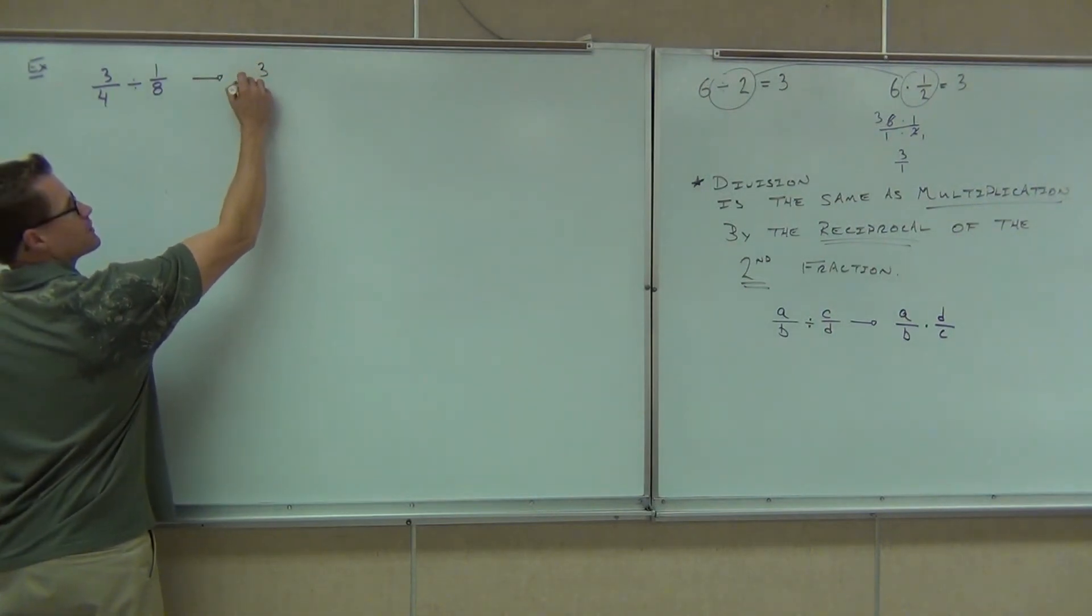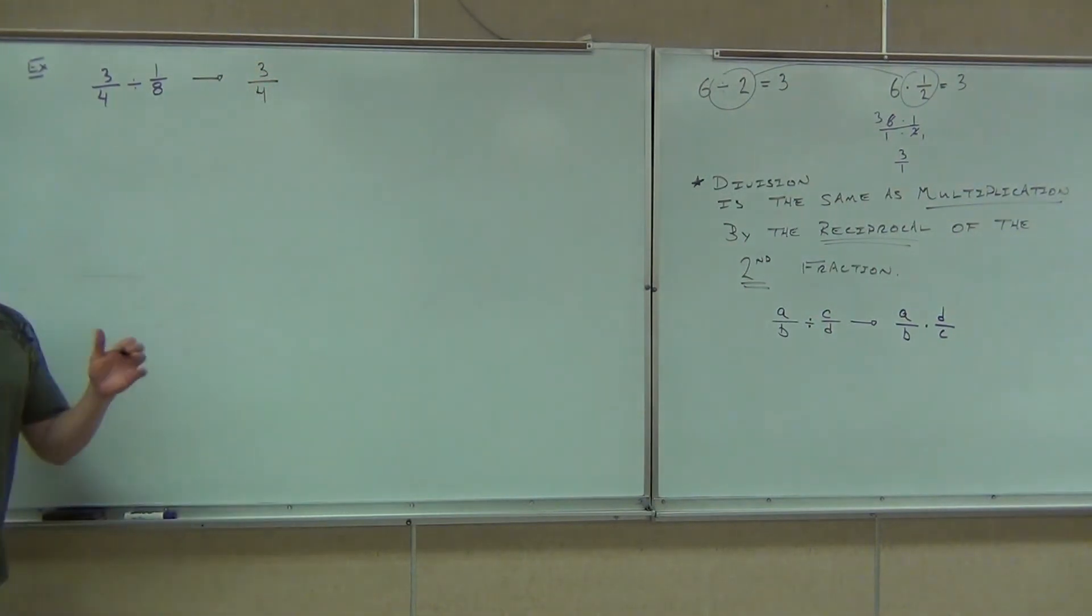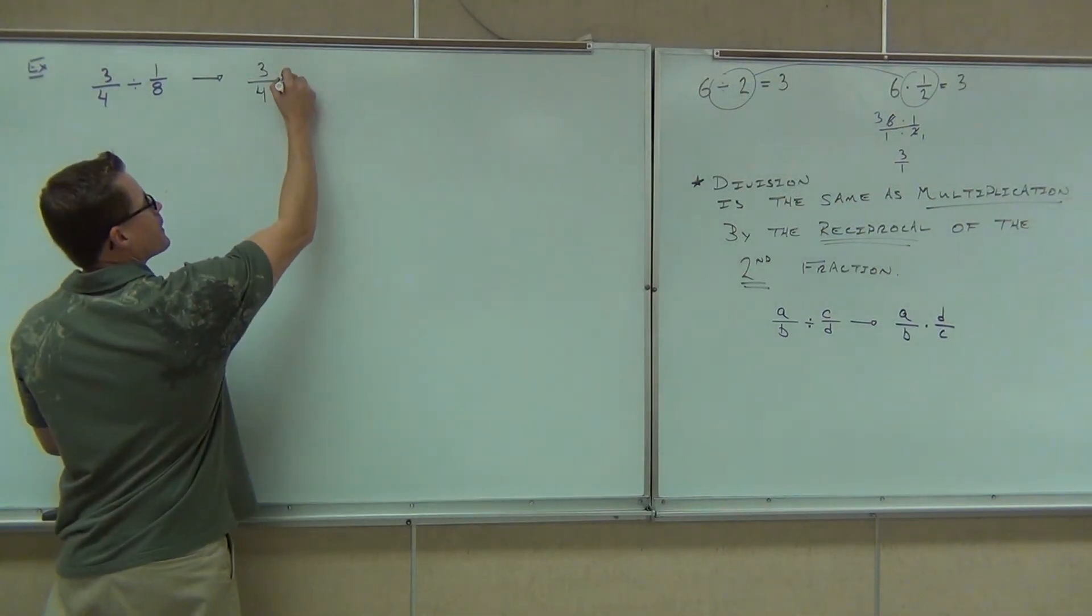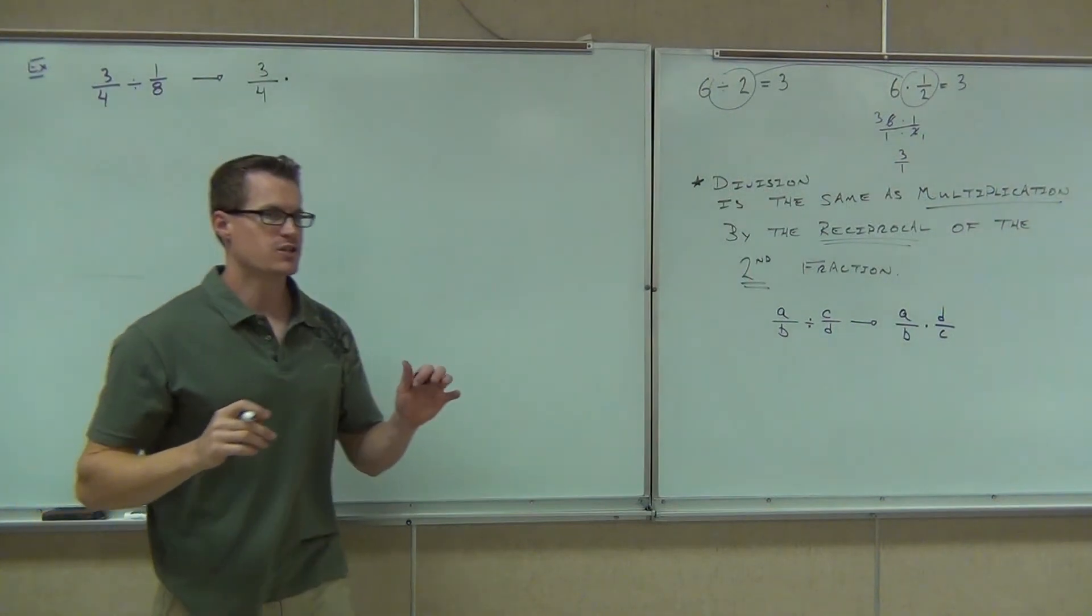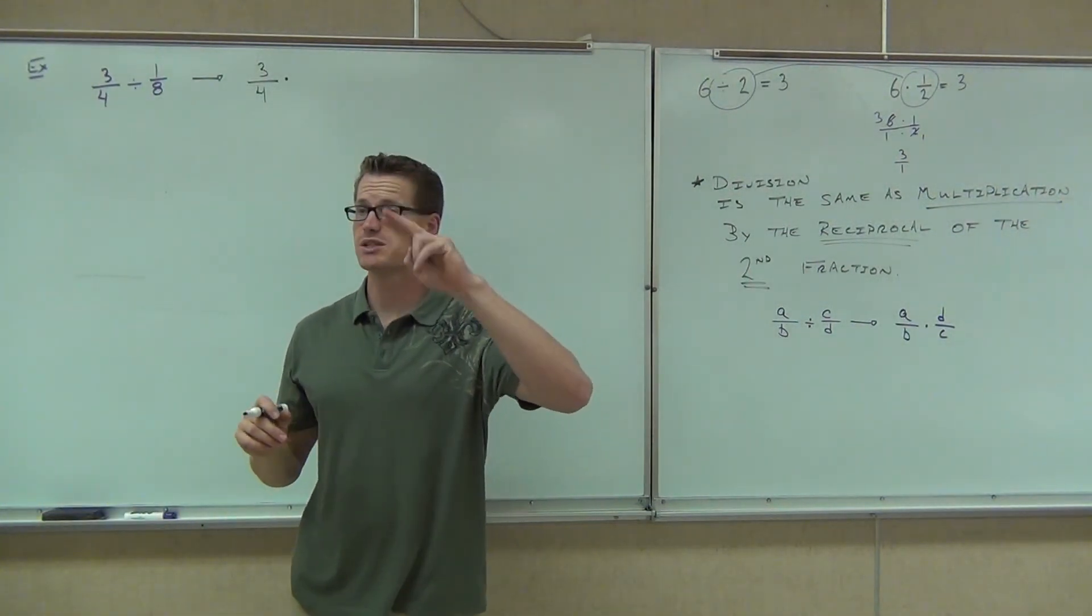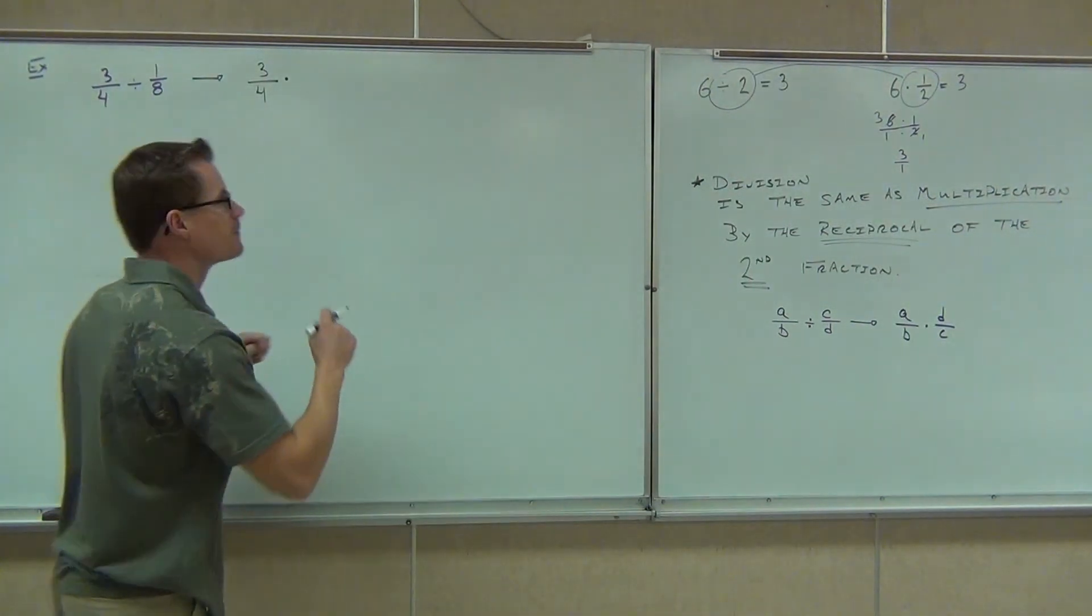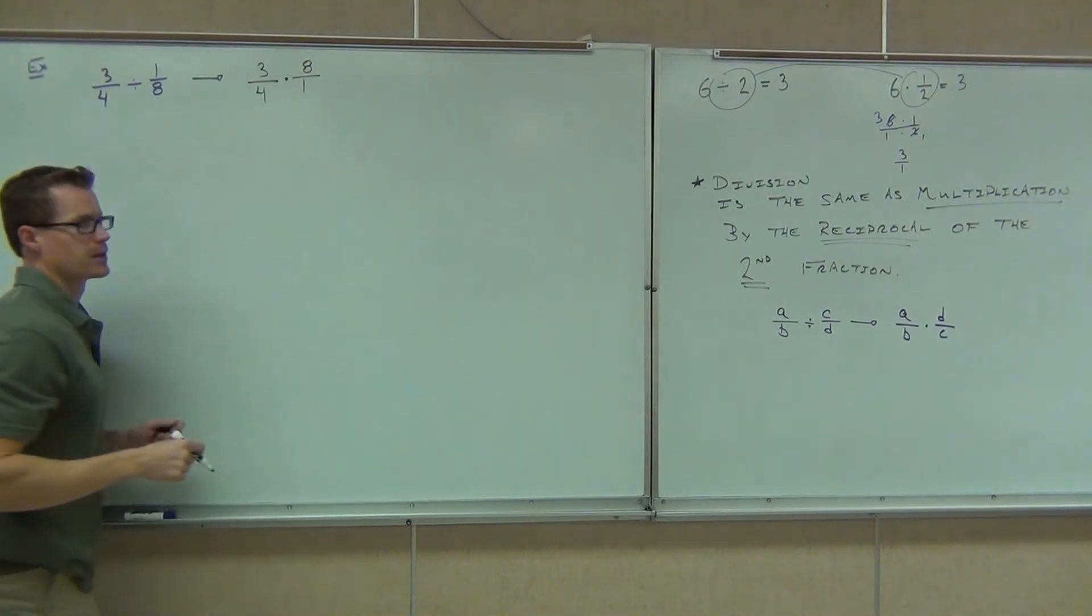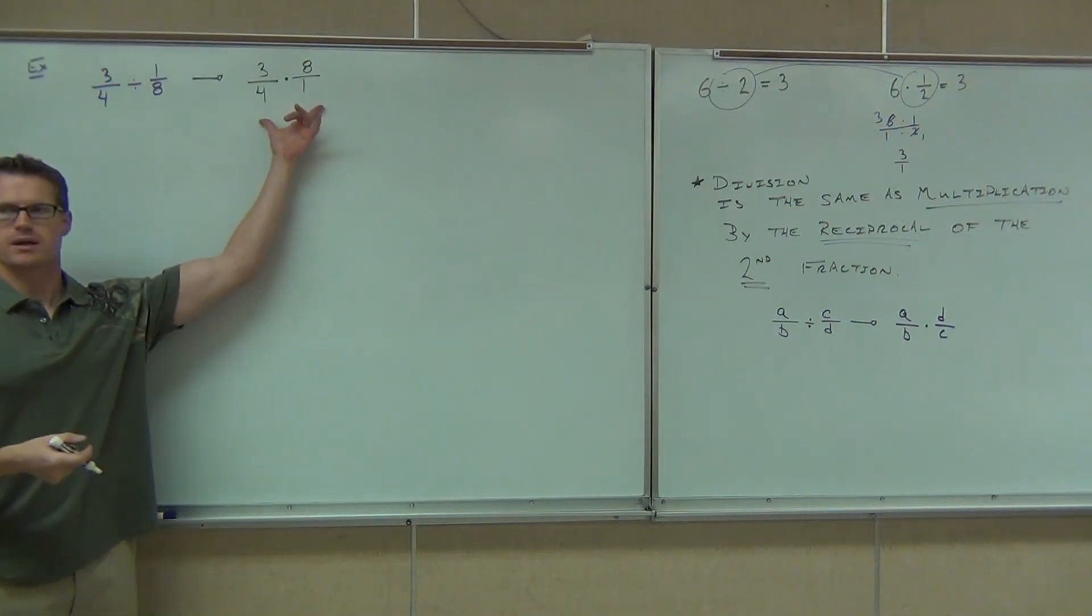The division, though, we're going to change it to multiplication. And the way we change to multiplication is we reciprocate the second fraction. What's my second fraction have to be? 8 over 1. Hey, we've seen stuff like that before, right? That's multiplication. How do we do multiplication?